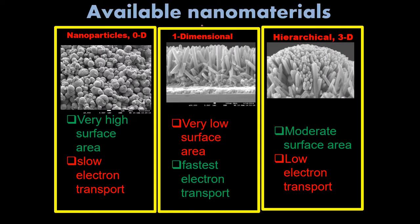Nanostructure materials can be used in many advanced electronic devices such as solar cells, catalysis, sensors, water filtration, medical purposes, lithium-ion batteries, and supercapacitors. Nano means that when the dimension is below 100 nanometers.